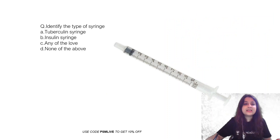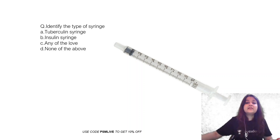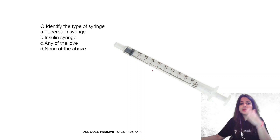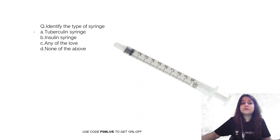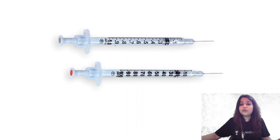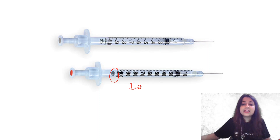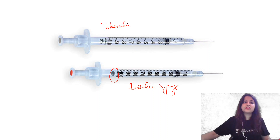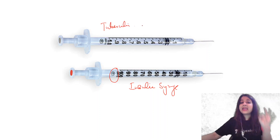Now this third image — identify the syringe. This is a tuberculin or insulin syringe. You can see the markings: 0.1, 0.2, 0.3, 0.4. When the markings are in 0.1, 0.2, 0.3, 0.4, this becomes a tuberculin syringe. But if the markings are in terms of units, that one is an insulin syringe. The tuberculin syringe has markings in mL.